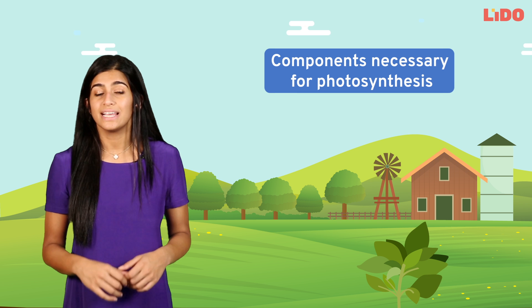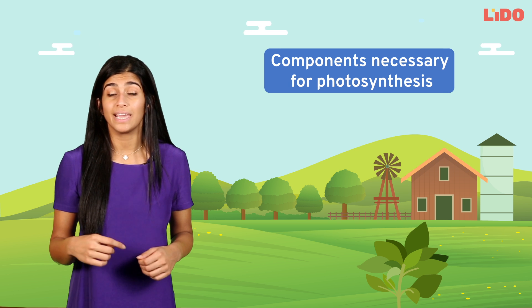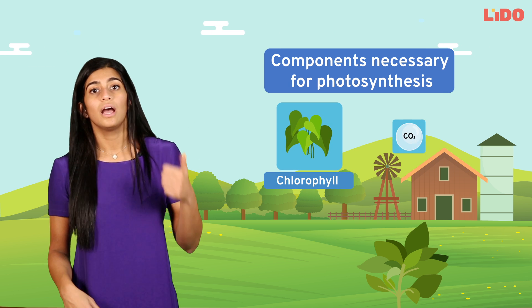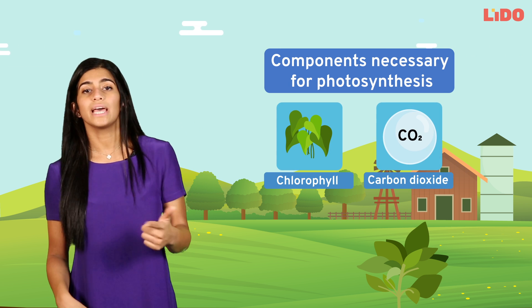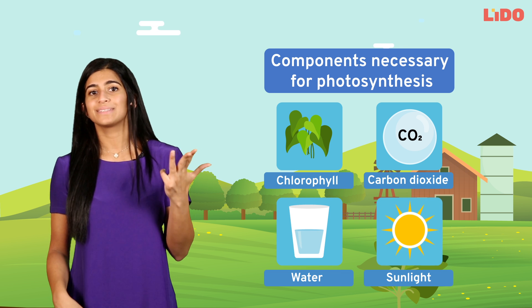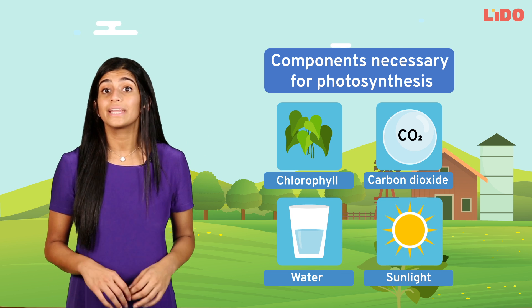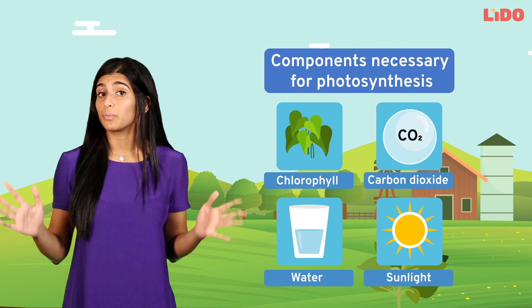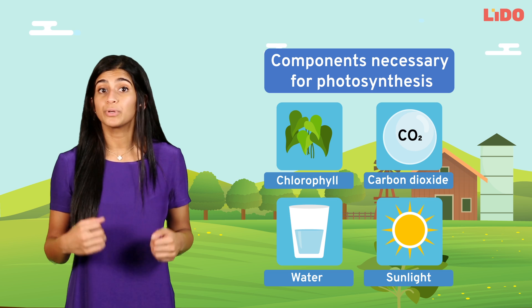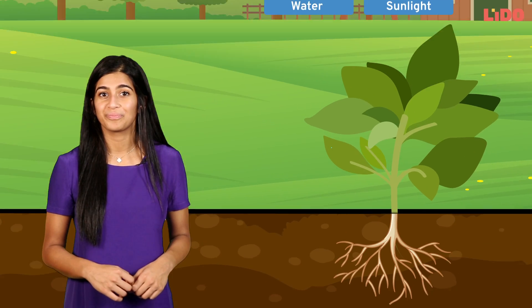The four components necessary for photosynthesis to take place are chlorophyll, carbon dioxide, water, and sunlight. Let us now look at the machinery within a plant that helps in putting these components together to make food.